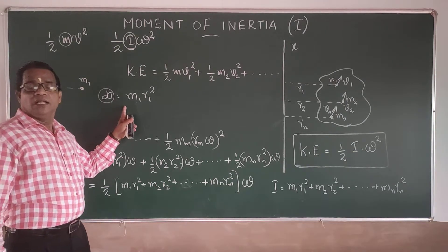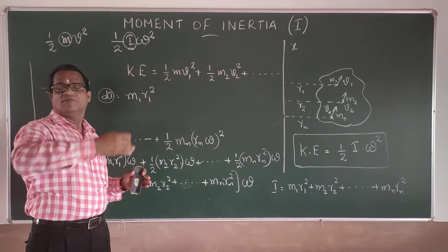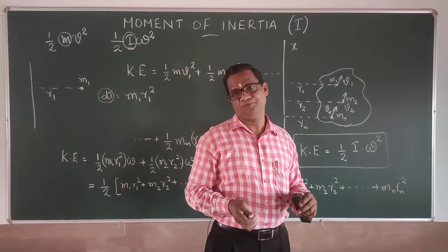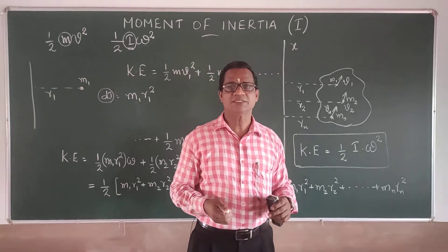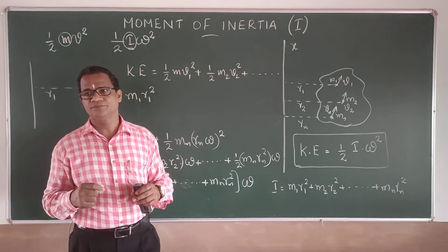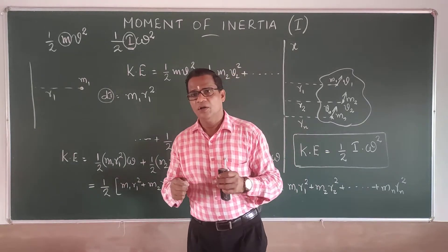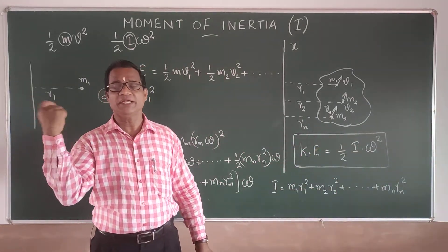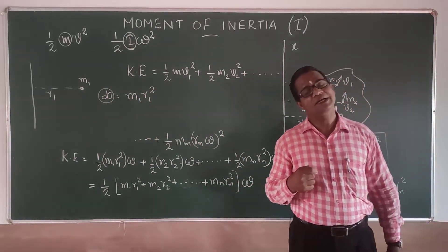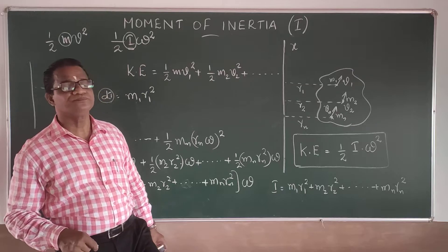As the mass distribution moves farther from the axis, the moment of inertia increases. For example, if you tie a stone to a short wire and rotate it, it is easy to stop. But if you rotate the same stone on a long wire, stopping it becomes much more difficult — its moment of inertia is larger.